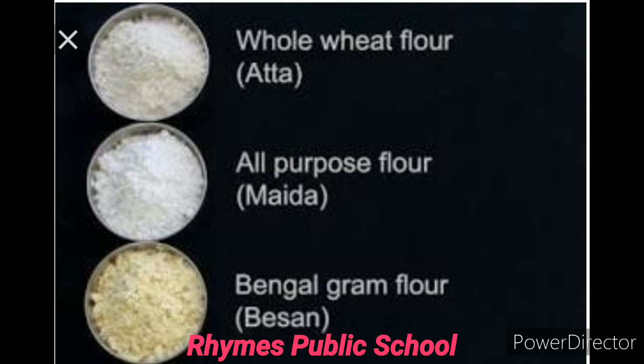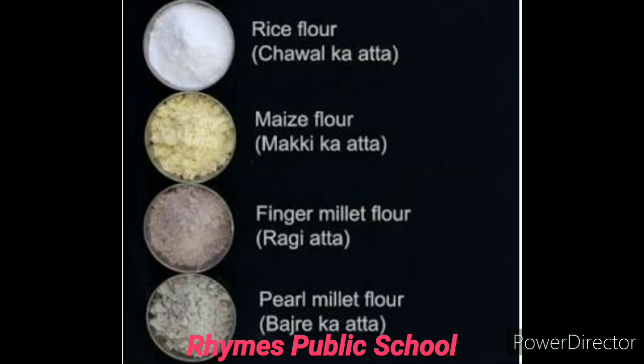Maida is called all-purpose flour, which is made of wheat only. Besan is called gram flour or Bengal gram flour. Chawal ka ata means rice flour. Makki ka ata means maize flour, kyunki makki ko maize kaha jata hai. Ragi ata is called finger millet flour, kyunki ragi ko finger millet kaha jata hai. And the last one is bajra, which is called pearl millet flour.